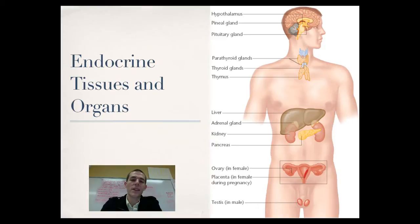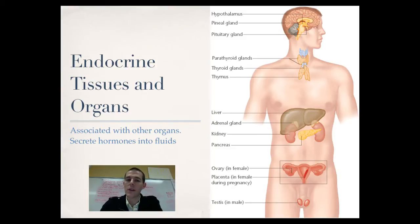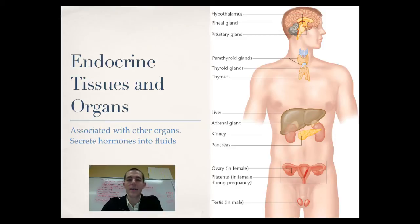Now let's talk specifically about the endocrine system itself. The endocrine system is made up of a ton of different tissues and organs. Within some organs, like the stomach, there are cells with an endocrine function that secrete some hormones. In other cases, there are whole organs dedicated to endocrine function — for example, the hypothalamus or the pituitary gland, as well as the adrenal glands, testes, and ovaries. All of these are organs dedicated to secreting hormones, known as endocrine tissues and organs.